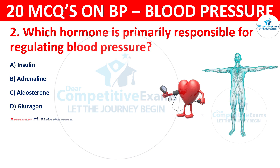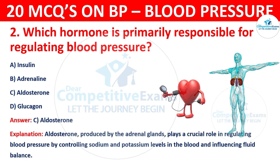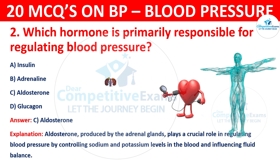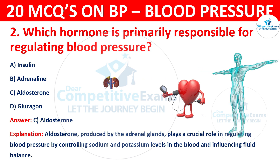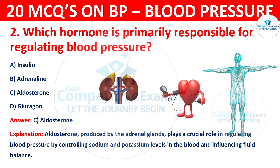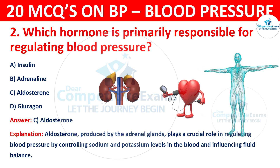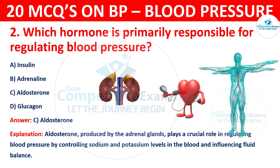The correct answer is C, Aldosterone. Aldosterone, produced by the adrenal glands, plays a crucial role in regulating blood pressure by controlling sodium and potassium levels in the blood and influencing fluid balance.